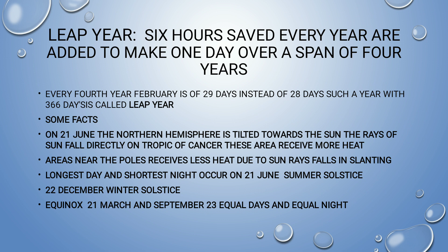Leap year: the six hours saved every year are added to make one day over a span of four years. A leap year comes every four years and consists of 366 days, while a normal year has 365 days. In a leap year, February has 29 days instead of the usual 28 days.